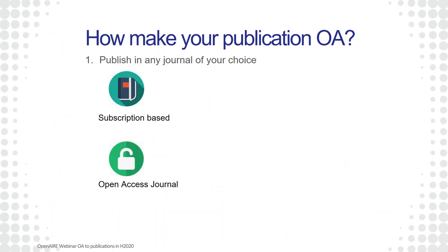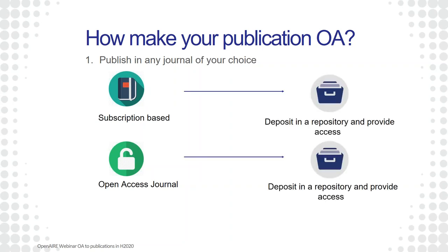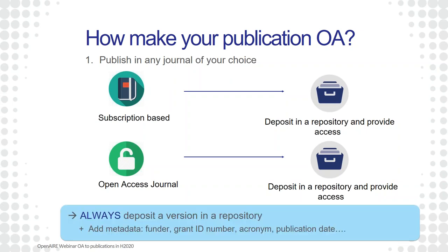There are two non-exclusive ways for authors to make their publication open access. You can choose a subscription-based journal — the traditional journal that asks for subscriptions — or you can choose an open access journal, but it's not mandatory. However, in both cases, you should deposit a version of your publication in a repository and provide access to it, because repositories are very good at archiving publications in a durable and sustainable way, and give your publication a digital object identifier so that it's uniquely identified. No matter which way you choose, you should always deposit a version in a repository together with metadata such as the grant ID numbers, so your publication can be linked to your project.